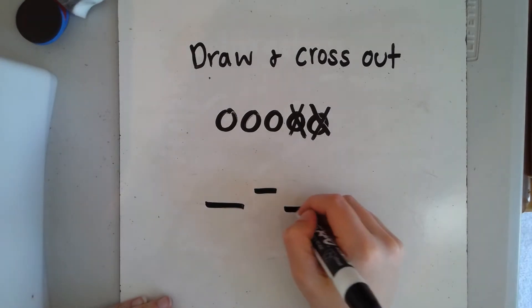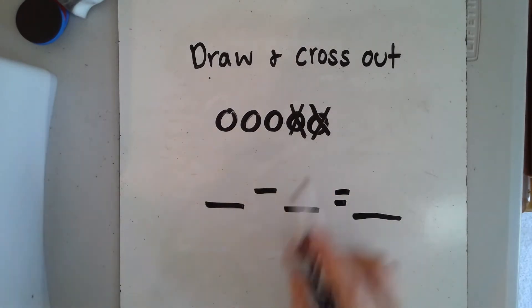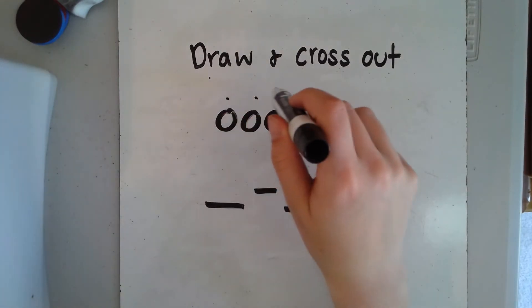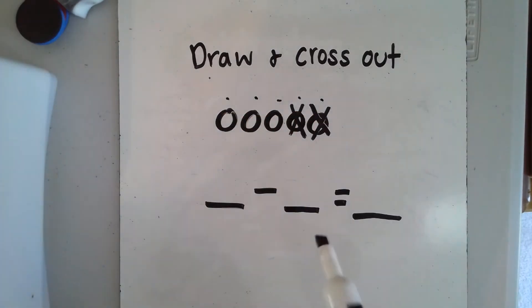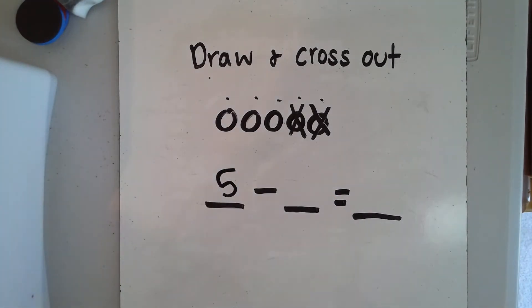If I wanted to write a number sentence for this, I would always put the number of circles that I start with in the first space. How many circles did I start with? Let's count: one, two, three, four, five. I started with five circles. Now let's see how many circles I took away, because remember the minus sign means to take away, and when I cross something out that means I've taken it away.